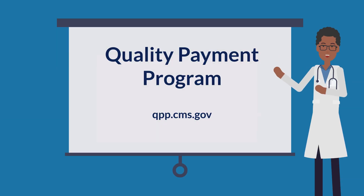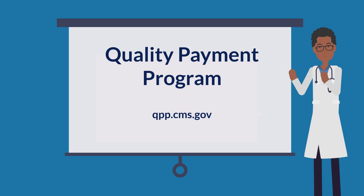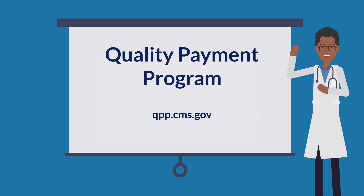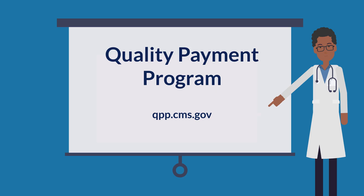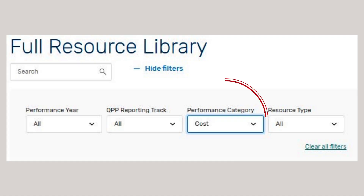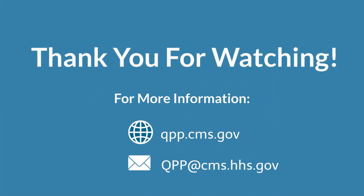For more information about the cost measures and requirements in traditional MIPS and MVPs, visit the Quality Payment Program website at qpp.cms.gov. For a full list of resources, go to the QPP Resource Library and filter by cost performance category. Thank you for watching this video.